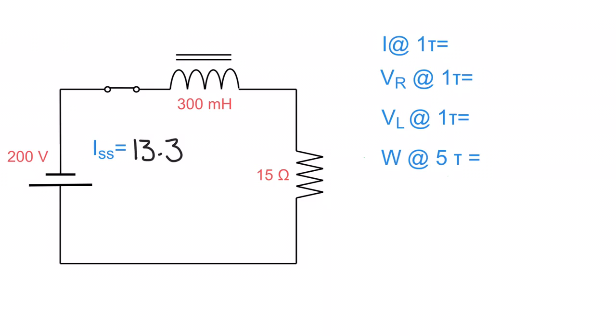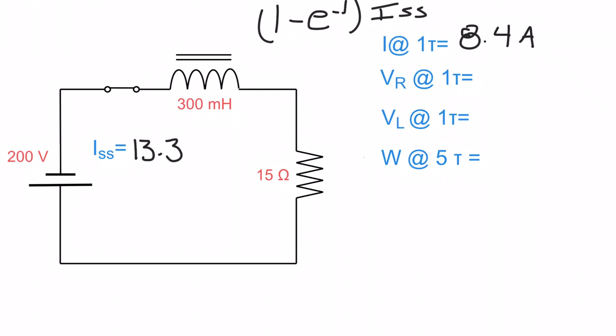Now we're going to work out the current at the first tau. Using the formula: 1 minus e to the negative 1, times ISS. Plugging that into the calculator gives us a current of 8.4 amps at the first tau.